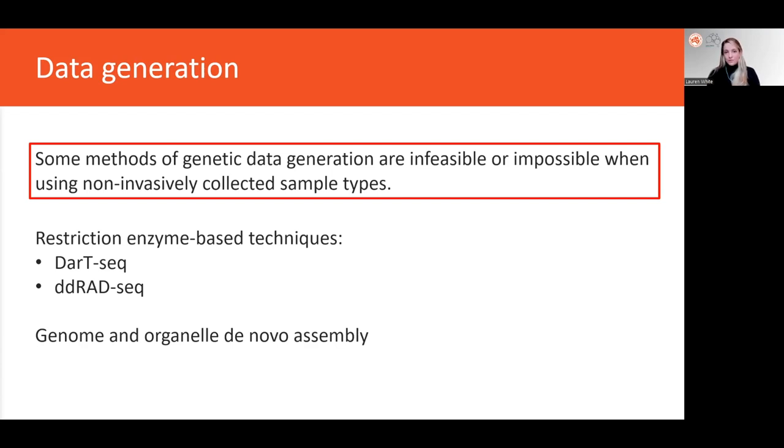These methods usually need a large amount of DNA and to resolve the complicated areas of the genome, for example the repetitive sections, you need fragments that cross those sections. You need long DNA fragments. So again, these aren't available in non-invasively collected samples.